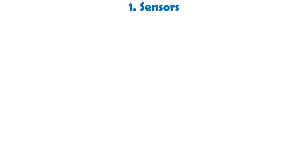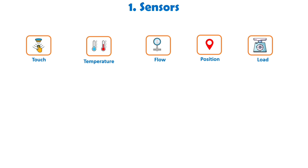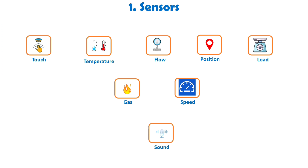In IoT applications, there are various sensors that we can utilize. For instance, touch sensors enable touch-based interaction, temperature sensors are used for measuring temperature, flow sensors detect the flow rate of a substance, and position sensors determine the position of an object. Load cells are employed to measure the weight of an object and gas sensors can detect gas leakage. Speed sensors are utilized to measure speed, and sound sensors are employed to detect sound. All of these sensors serve as input devices, with some being digital and others analog. These sensors are typically integrated with microprocessor-based embedded systems, allowing them to collect data and connect to the internet.